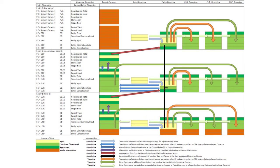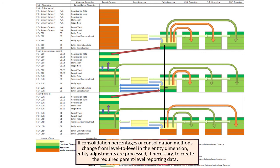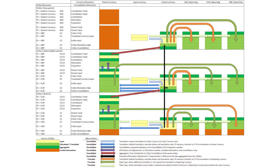This process is repeated as data is consolidated up through the entity hierarchy. Finally, if consolidation percentages or consolidation methods change from level to level in the entity dimension, entity adjustments are processed if necessary to create the required parent level reporting data.